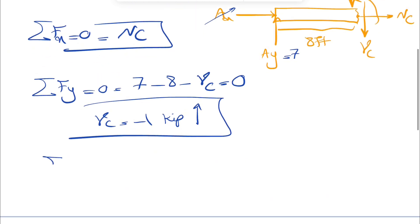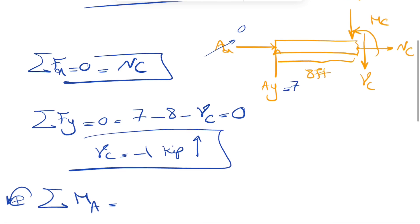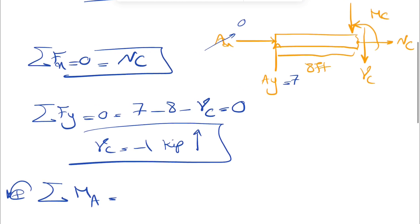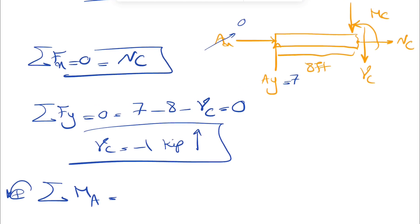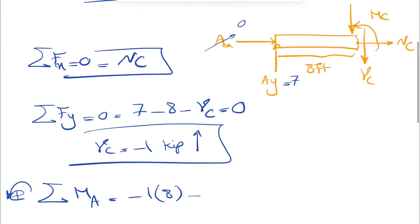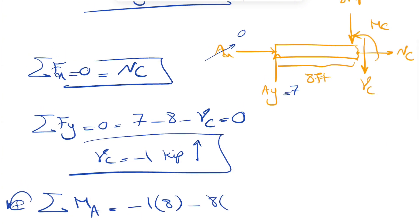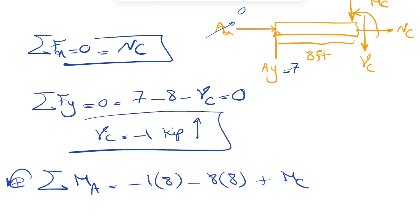And the last one would be our moment equation in order to find the Mc. I'm going to do about point A. The moment that we're going to have is the moment of Vc, which is clockwise. Negative Vc is 1 kip times the distance, 8. We also have the moment of 8 kip. That one also counted clockwise, so negative for that one too. Plus Mc.